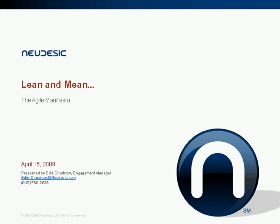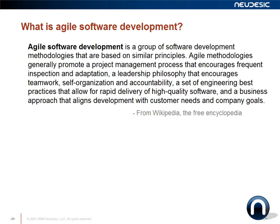I implemented my first Agile practices within that organization and have not looked back since. Agile software development refers to methodologies or frameworks that share a series of similar principles — promoting project management processes that encourage inspection and adaptation, a leadership philosophy that encourages teamwork, self-organization and accountability, and engineering best practices that allow for rapid delivery of high-quality software aligned with company and customer goals.